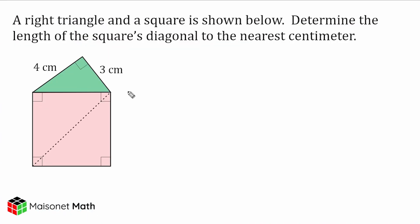Okay, what we have right here is a composite shape. We have a right triangle on top of a square. And it says it right in the problem that we have a right triangle and a square. And we have to figure out the length of the square's diagonal, which is this distance right here to the nearest centimeter, which means the nearest whole number. So we should just assume that we're going to have some sort of decimal in our answer, and then we're going to have to round it at the end.